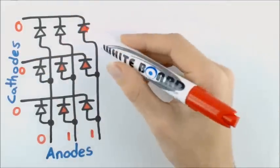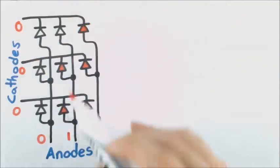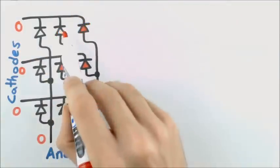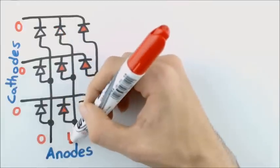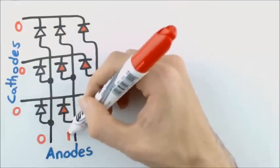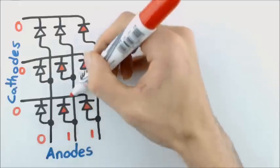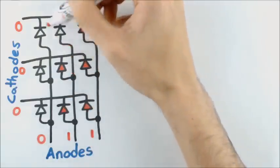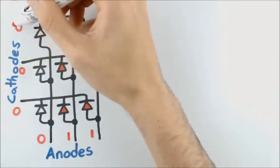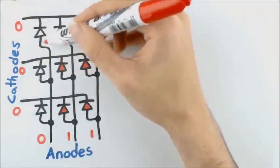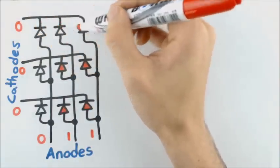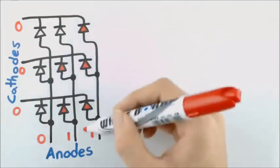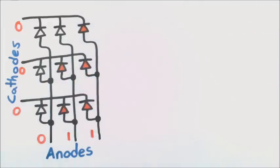But this causes a problem, and it's all because of this LED right here. Right now it says on for this anode and off for this one, so this LED will also light. So we can't actually get this pattern with our LEDs.